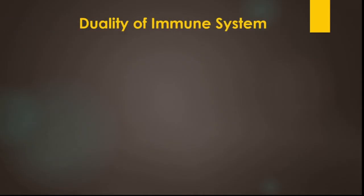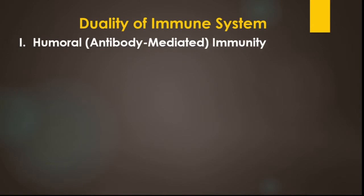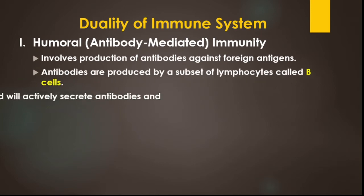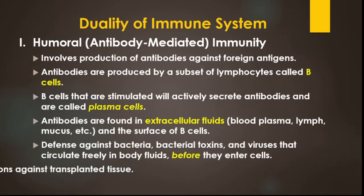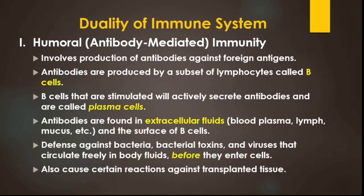The immune system is dual — there are two types of cells in the immune system to provide specific immunity. The first part is humoral immunity, and the second part is T-cell mediated immunity.